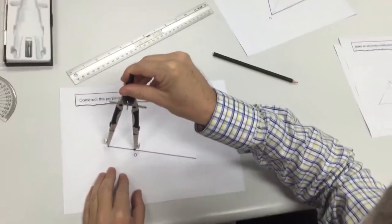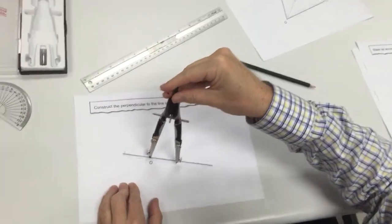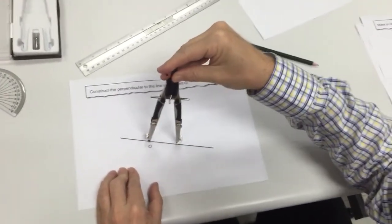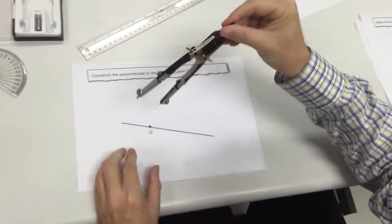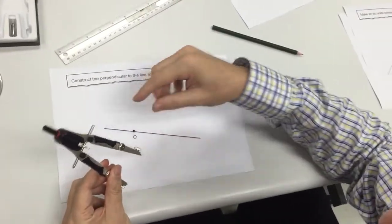And make an arc there. With the same distance, make an arc there. Now what we've got to do is construct the perpendicular bisector between these two points.